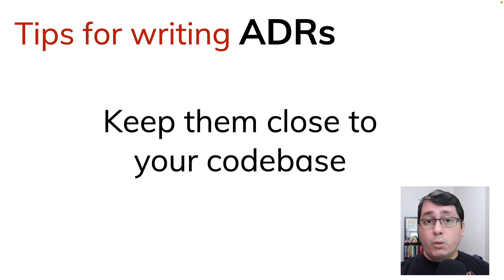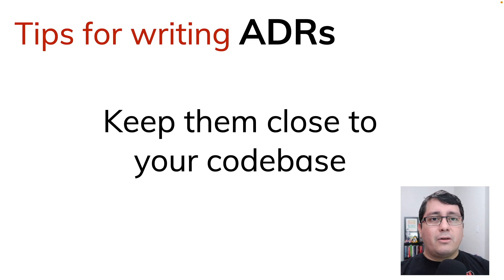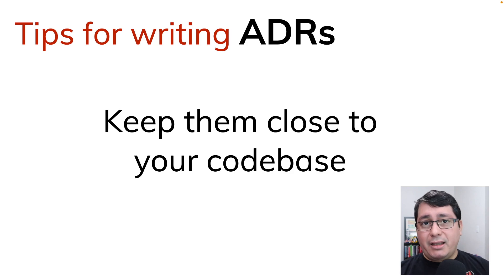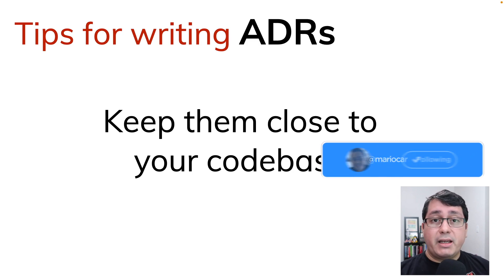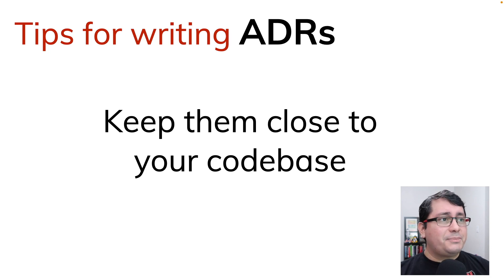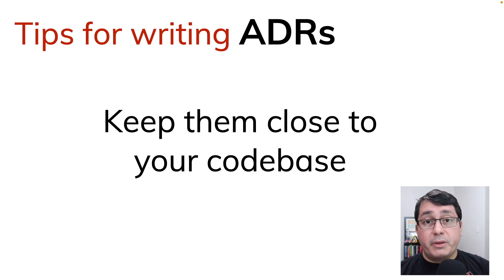Next: keep ADRs close to your codebase. Don't create a separate Google Doc or a different repository for ADRs — keep them together with whatever they are describing. For example, if the ADR is applicable to a concrete service, add it to a docs folder, an ADRs folder, or an architecture decisions folder — whatever convention your team follows. That way when committing changes you can refer to the ADR specifically, and when everything is deployed to production you can mark it as complete. If a new team member joins, they can find the ADRs right there in the codebase.